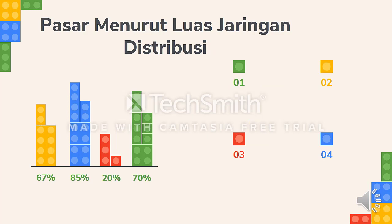Pasar menurut luas jaringan distribusi. Pertama adalah pasar setempat, yaitu pasar yang digunakan oleh masyarakat di wilayah sekitar dan melibatkan penjual dan pembeli di sekitar daerah tersebut. Bentuk dan jenis barang yang diperdagangkan sangat dipengaruhi oleh lingkungan sosial budaya setempat.